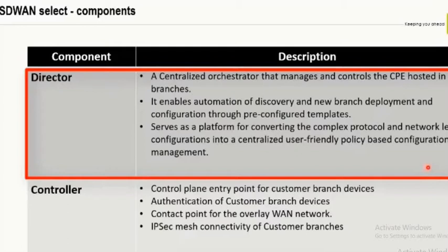Converting complex network-level configurations into user-friendly templates means, for example, building BGP from the CE router to the PE, or OSPF between the CE router and the customer's router. All these things can be done in a single touch rather than multiple iterations. This saves a lot of time and effort in analyzing issues when a BGP or OSPF neighbor doesn't come up.